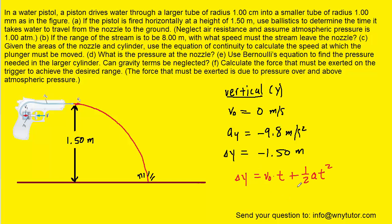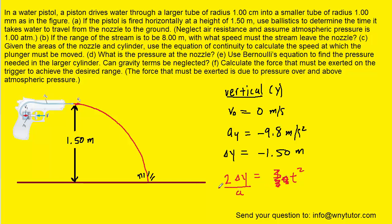Here is the kinematics equation from an earlier chapter. Because the initial velocity is 0, that term drops out. We solve for time by multiplying both sides by 2, which cancels the one-half, then divide by the acceleration and take the square root. Plugging in the known values for delta y and acceleration, the time required for the water to hit the ground is roughly 0.553 seconds.